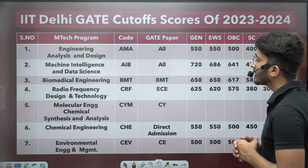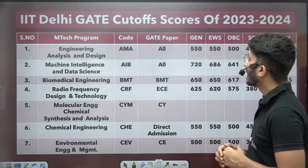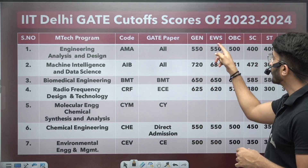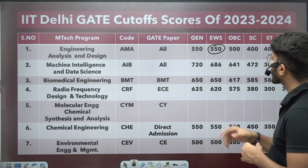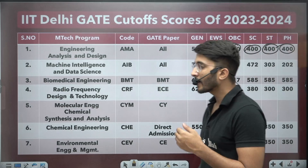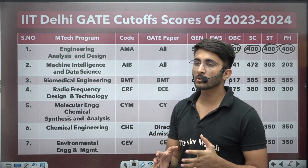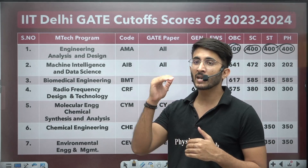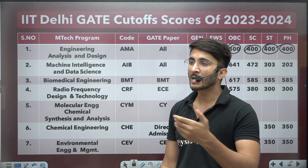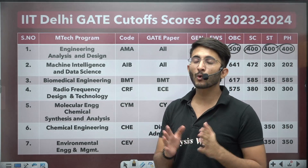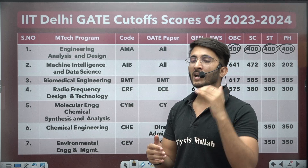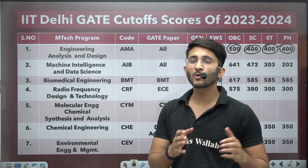For IIT Delhi GATE cutoff score of 2023-24, for Engineering Analysis and Design you need at least 550 GATE score in General category, 550 for EWS, 500 for OBC, 400 for SC, and similarly for ST and PH. Whenever IITs provide offers through the COAP round, the cutoff will be different, and if seats remain, the IIT will offer seats in a spot round with a fixed cutoff for eligibility.